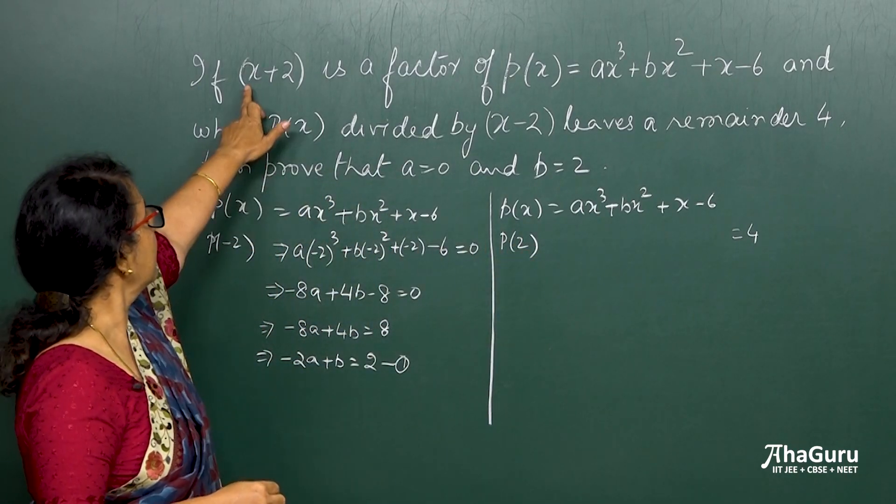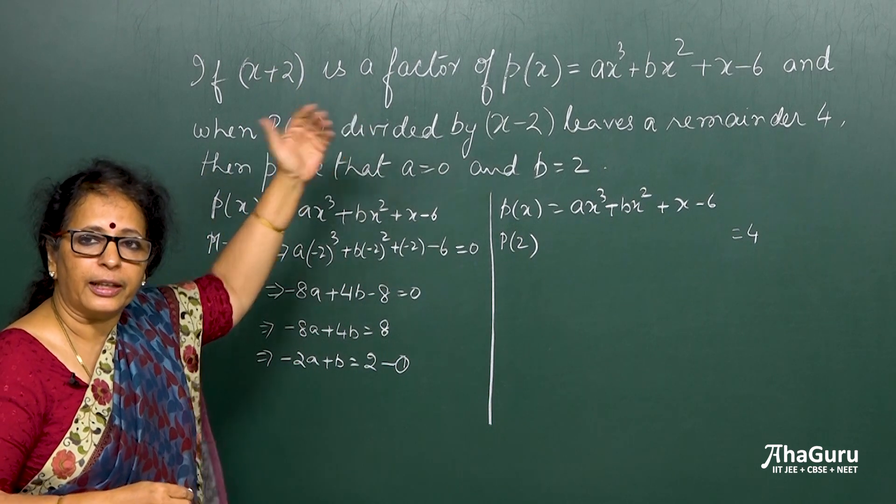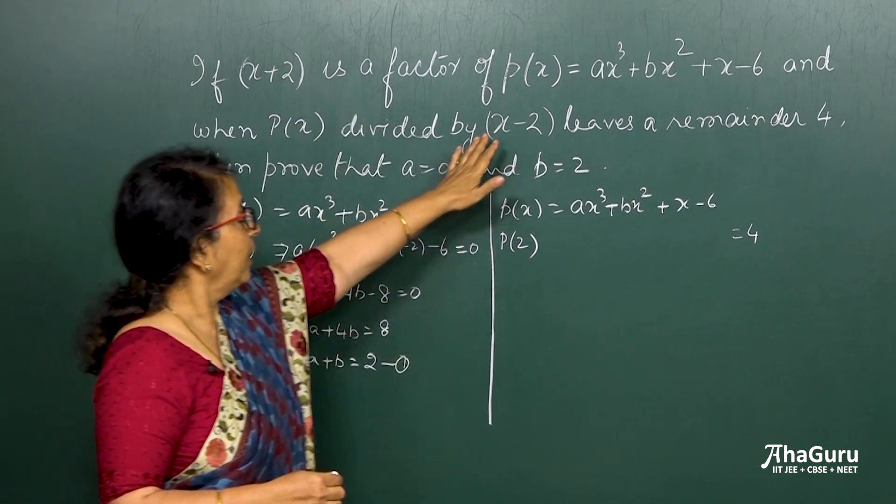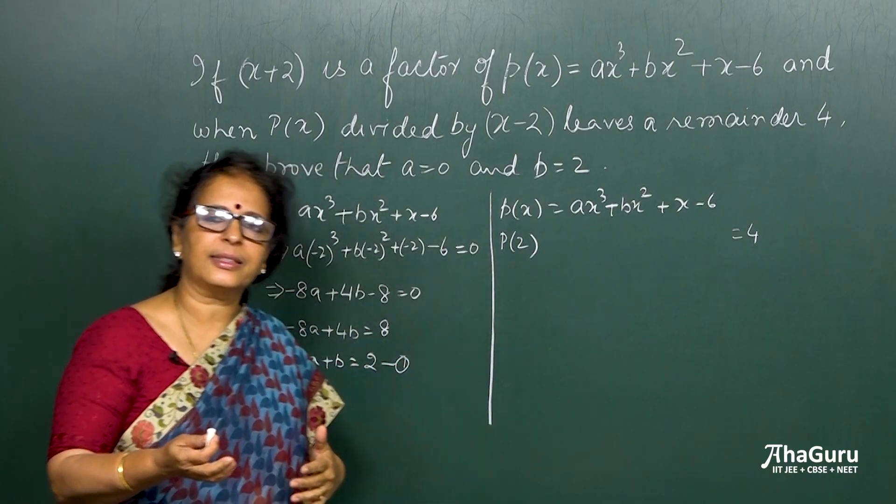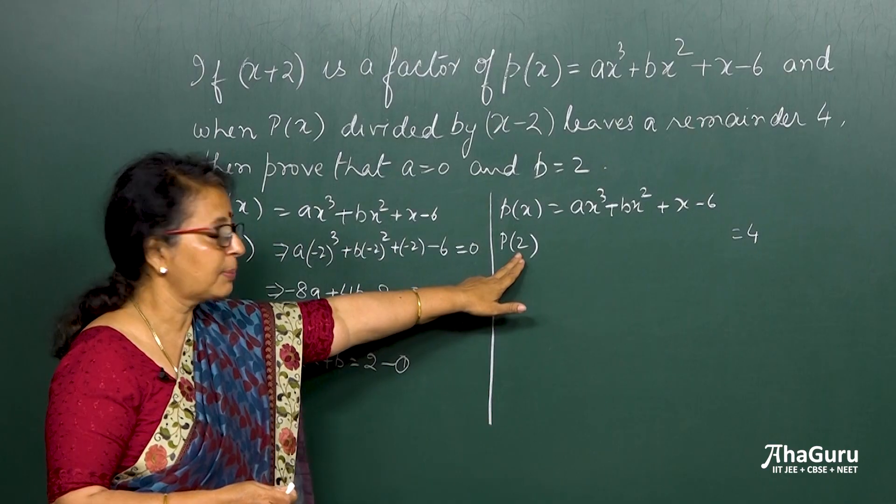It is p of minus 2 because x plus 2 equals 0 I had taken, so x equals minus 2. Here x minus 2 equals 0, that makes it x equals plus 2. So that is why this is plus here.